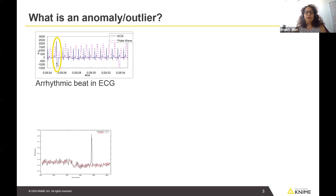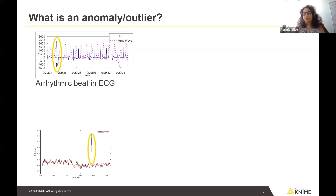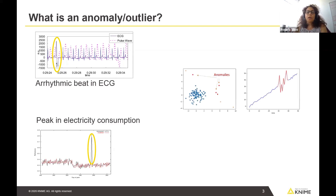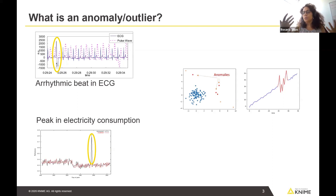If we have an electricity usage time series, we are going to have some oscillations, but nothing too extreme, and then suddenly we have a peak — this is also an anomaly in the usage of electricity. In the stock market, things are moving in a way that we expect, and then suddenly something happens and there is an anomaly in the behavior of the stock market, something that we don't expect.